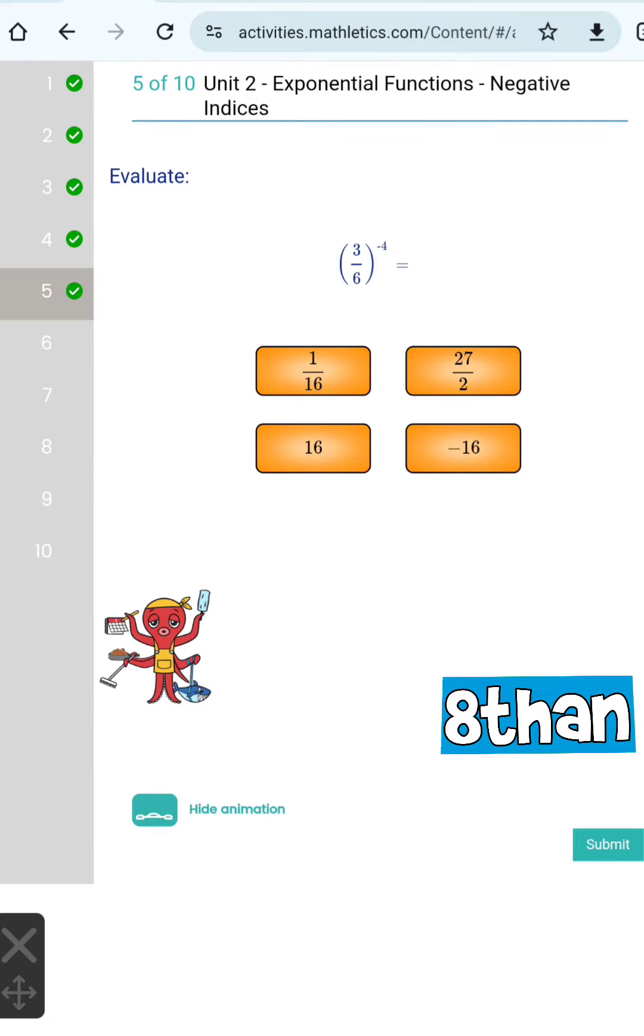Now 3 over 6 to the power of negative 4, or simply a half to the power of negative 4, is going to be bigger because again it is a fraction to the power of a negative integer, which gives me the answer of 16.